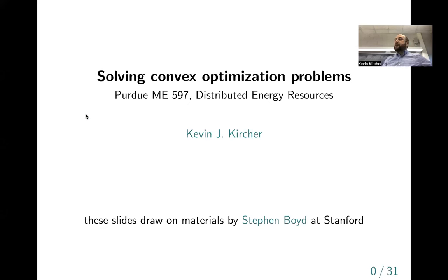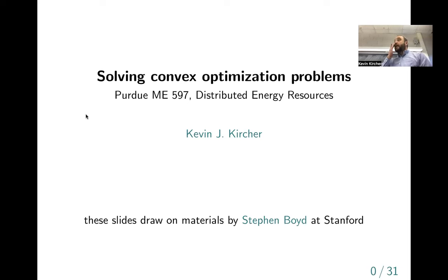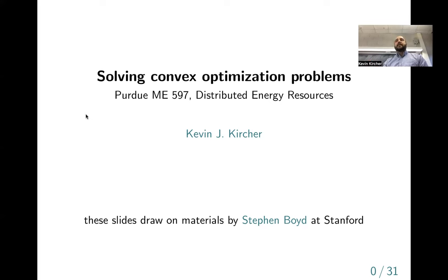Today we'll be talking about solving convex optimization problems. The last two lectures covered what optimization is as a broad, challenging field, and specifically convexity of sets and functions. When you're minimizing a convex function over a convex set, that's called a convex optimization problem — a nice class for which you're guaranteed globally optimal solutions in polynomial time. This happens to be well suited to the DER stuff we're studying in this class.